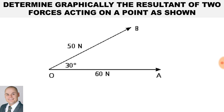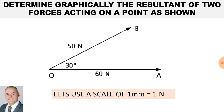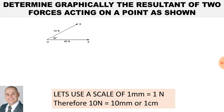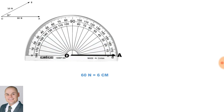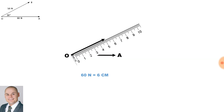Determine graphically the resultant of two forces acting on a point. The letter O is our reference point. Force OB is 50 Newtons at an angle of 30 degrees, and on the horizontal plane we have force OA at 60 Newtons. We will use a scale of 1 millimeter equal to 1 Newton, or simplified, 10 Newtons equals 1 centimeter so we can work with centimeters on our ruler. Starting at reference point O, force OA is 60 Newtons, which is 6 centimeters on the ruler. Using a protractor to determine the 30-degree angle from the horizontal plane, force OB is 50 Newtons, giving us 5 centimeters.